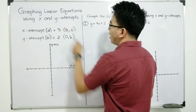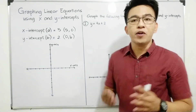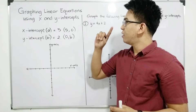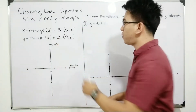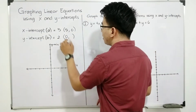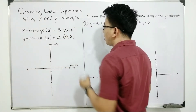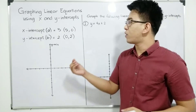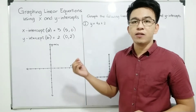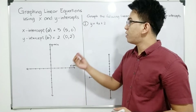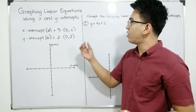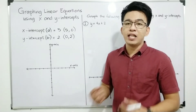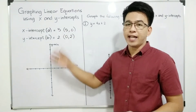Therefore, if your x-intercept is 5, the coordinates of your x-intercept are (5, 0). And since your B, or the y-intercept, is equal to 2, we can replace this variable B by 2. Therefore, the coordinates of your y-intercept are (0, 2). Now, let's plot or locate the location of your x-intercept and y-intercept, and let us graph a linear equation with this kind of x and y intercepts.